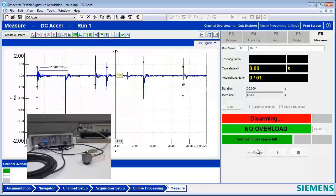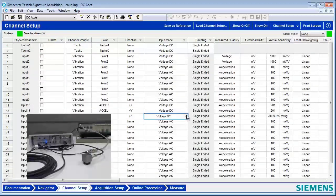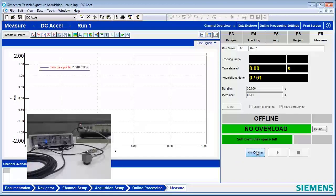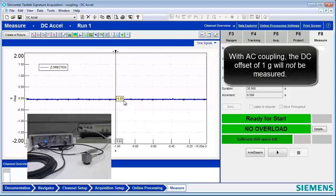If I go and look at the channel setup, it's set to voltage DC. Let's flip it to voltage AC and see what happens. Now when I go to measure, am I going to see that gravity offset? You will not. Let's see what it reads. Wow, we've eliminated gravity.